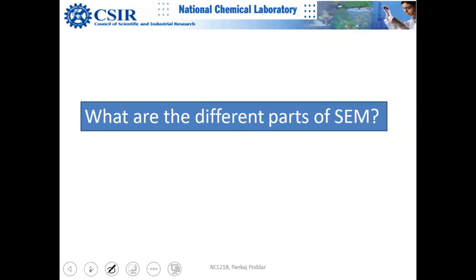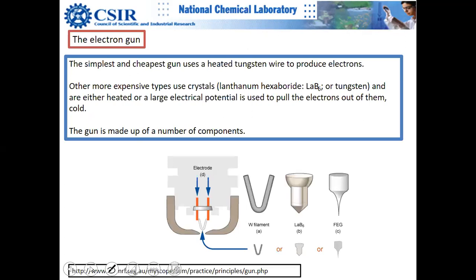We will dive deeper into the different parts of SEM. Our knowledge of TEM helps here — there is not much difference. The electron gun is exactly the same. The field emission gun tip is much sharper and more pointed because the electric field is much higher at a point.